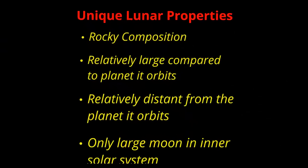Our unique moon is different from other moons in four main ways. First off, its composition is rocky. That doesn't sound very interesting, but when you compare other moons, they're mostly half ice, half rock — kind of like a large comet. Ours is mostly rocky.